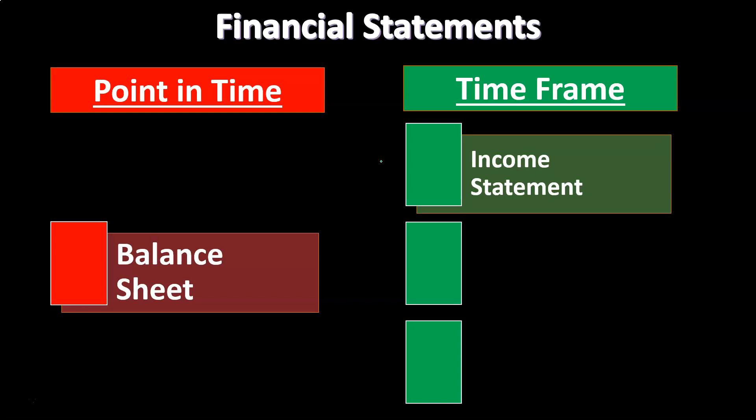The income statement is the primary statement we think of as the performance statement. It represents how the company did in the past — one year's worth of data to tell how they got to the point in time represented at the end of the time frame, which is the balance sheet. The income statement represents the beginning to the end, January through December, whereas the balance sheet represents where we are as of the end of the time frame, December.